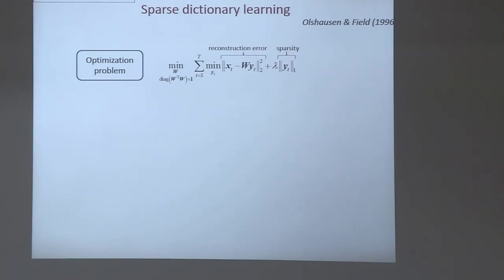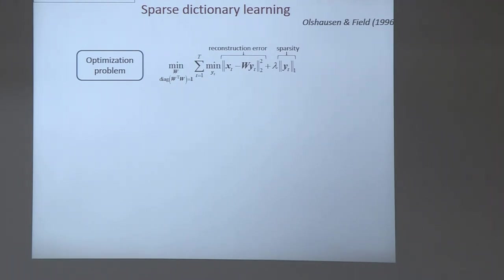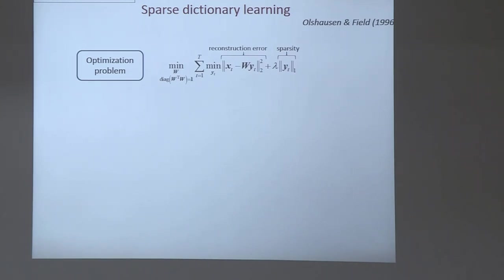For each stimulus, we find the optimal Y_T by solving this optimization, and then find the dictionary W — normalized to one — that optimizes the whole cost. We favor the non-negativity prior, which actually produces sparse output because of competition between components. This was historically the first kind of over-complete dictionary learning framework, which is why I'm discussing it. It can also be thought of as NMF — non-negative matrix factorization.